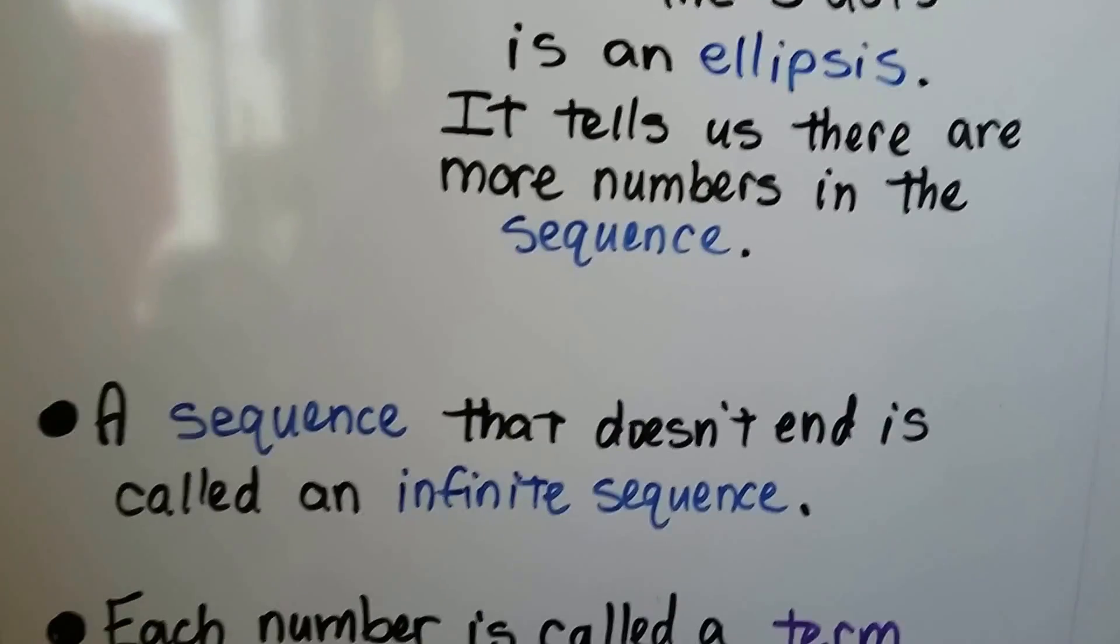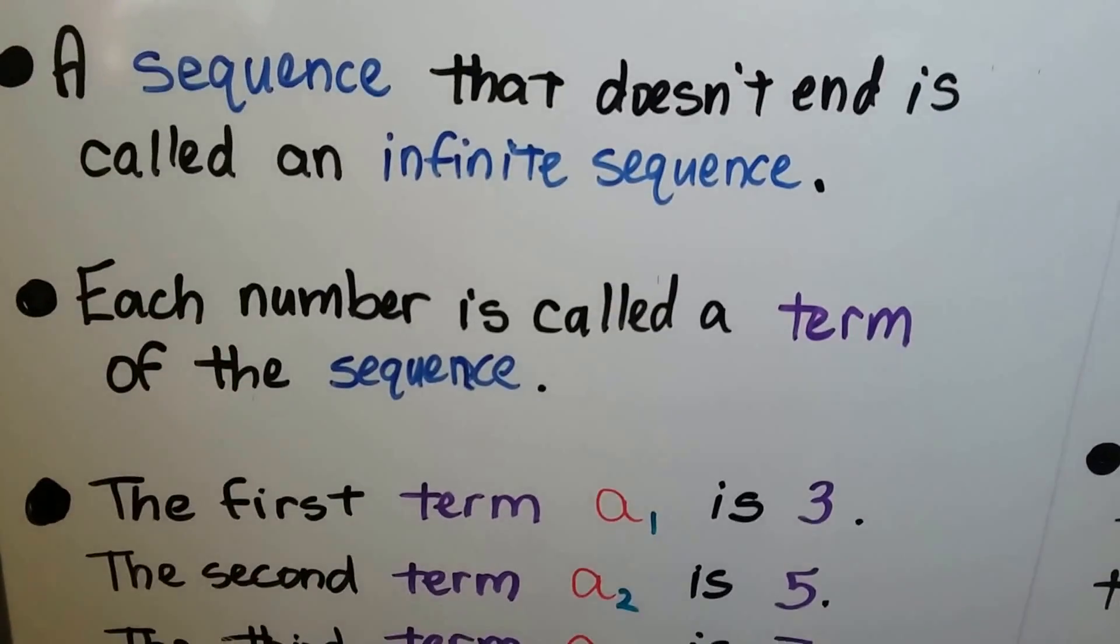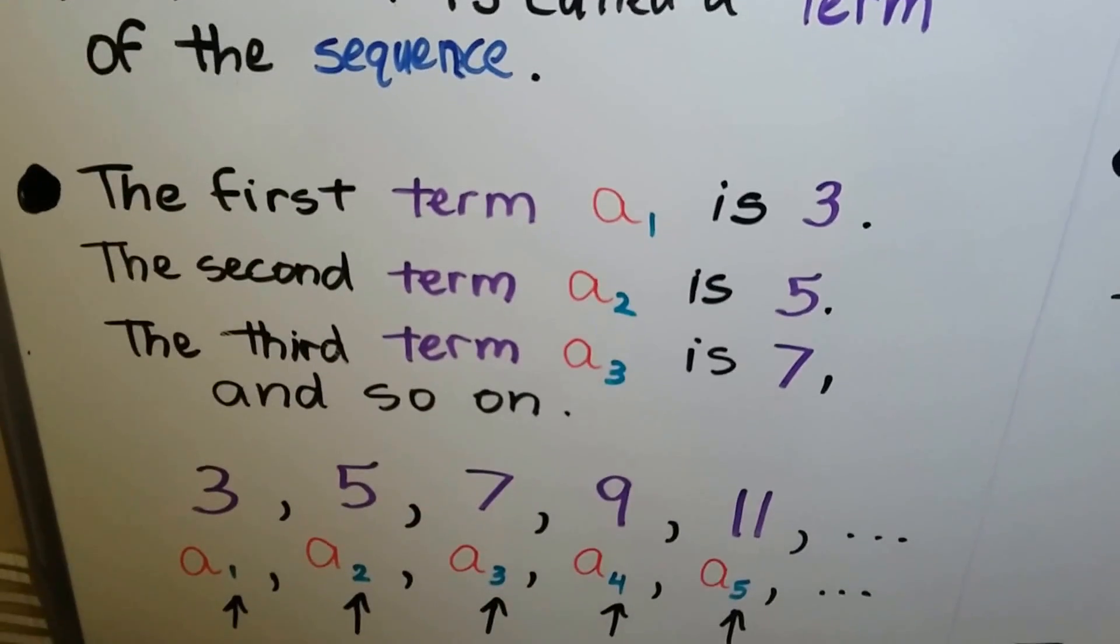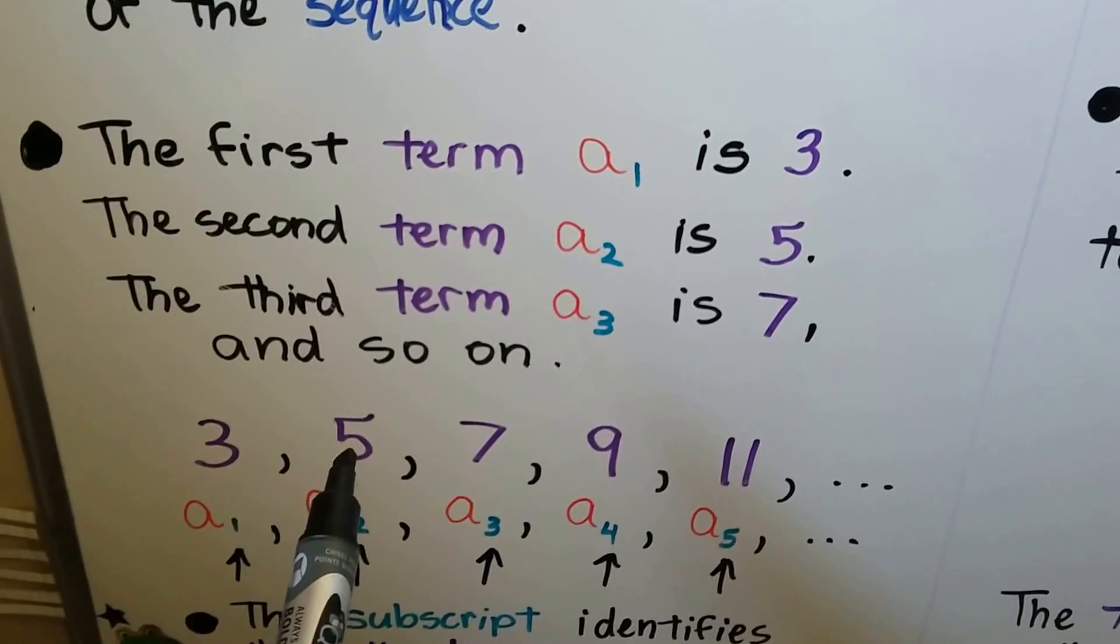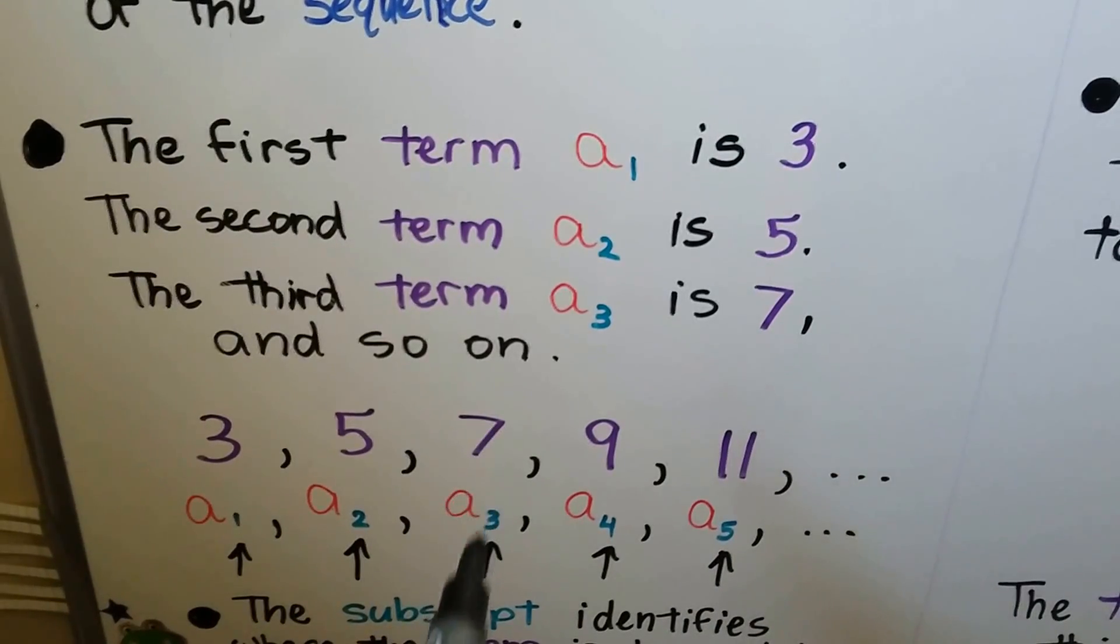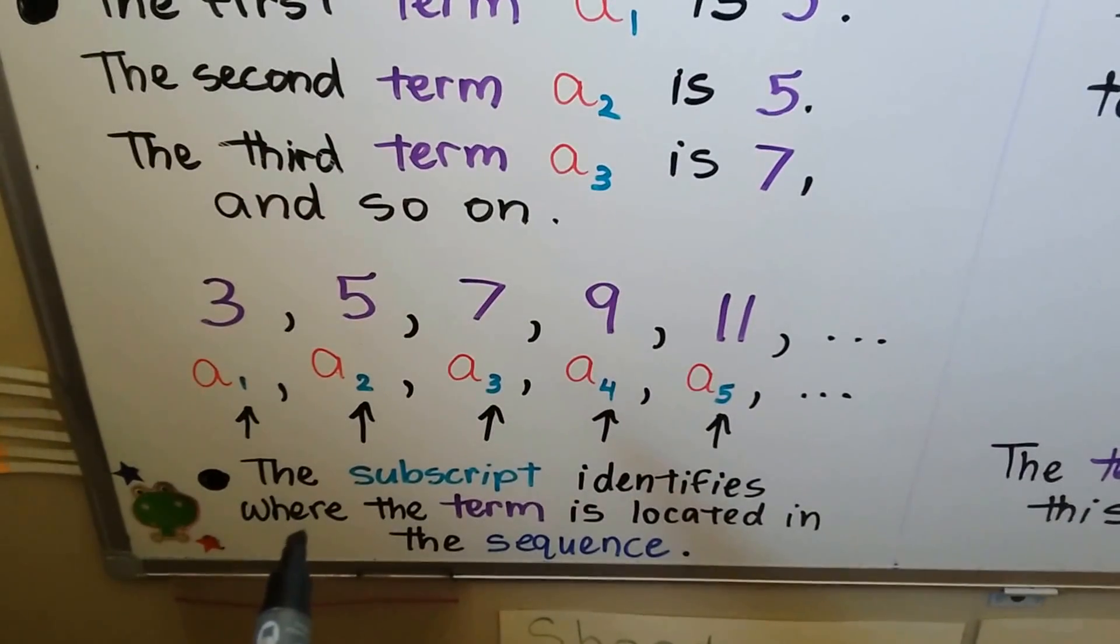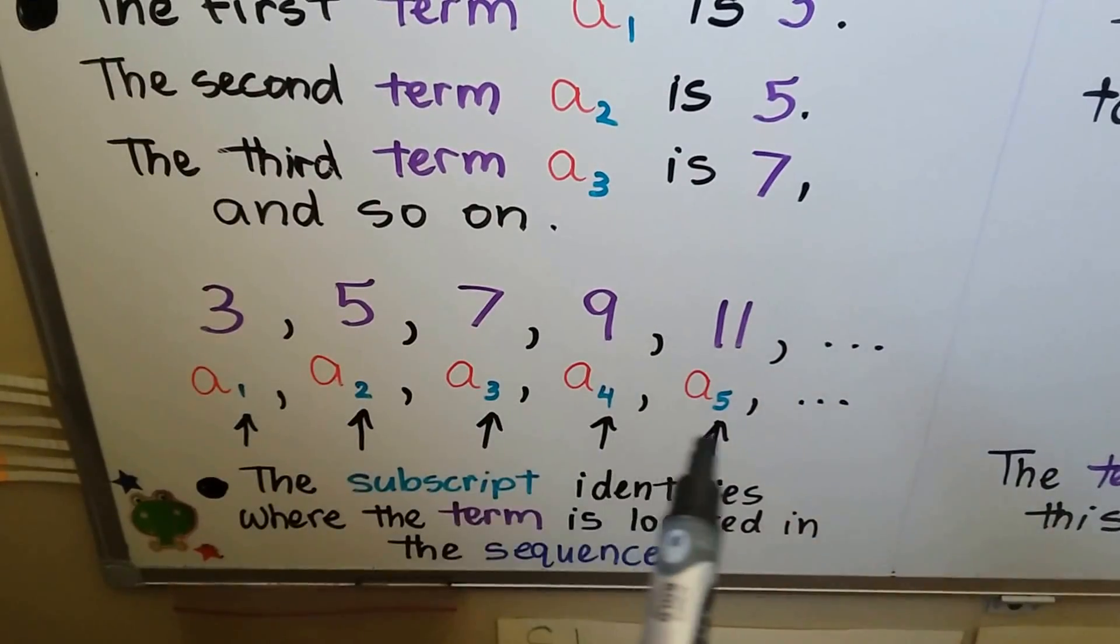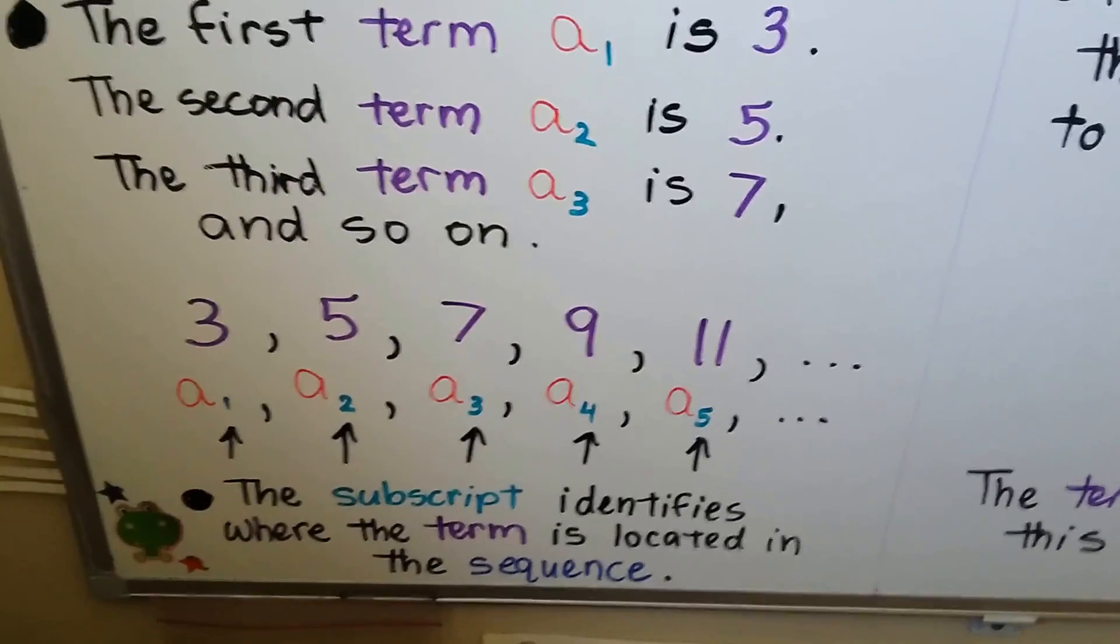A sequence that doesn't end is called an infinite sequence. That makes sense, right? It goes on for infinity, and each number is called a term of the sequence. The first term, a sub 1, is a 3. The second term, a sub 2, is a 5. The third term, a sub 3, is a 7, and so on. The subscript identifies where the term is located in the sequence, so we know where that number is located in the sequence. It also helps us find another one.